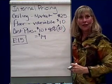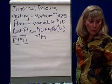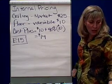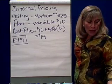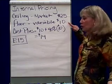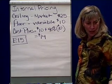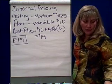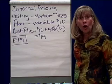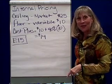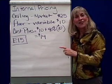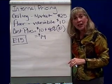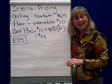Let's answer the questions. Number one: what is the market-based transfer price alternative? It's $25. Second: what is the minimum transfer price alternative? It's $10. Third: compute the cost-plus transfer price alternative, assuming the cost includes variable cost only. We've done that as well — it's $14. This is an example of transfer pricing, which generally is negotiated between the buying and the selling divisions.